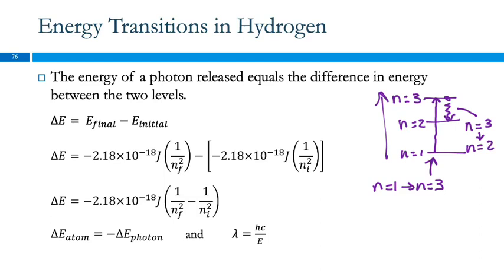It doesn't matter what's in between — it's just the final and the initial. And if we're wanting the wavelength, after we calculate the energy, the wavelength is equal to hc over the energy — that's just a rearrangement of E equals hc over lambda.